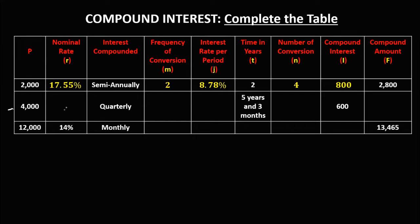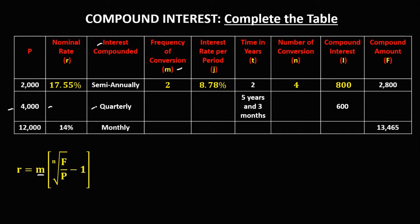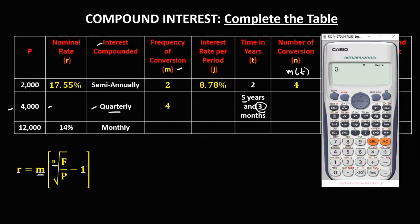For the next row, using the same formula, M is the frequency of conversion. Since interest is compounded quarterly, M is equal to 4. To solve for N, N is M times the time. Since the time is 5 years and 3 months, we convert 3 months to years by dividing 3 by 12, which gives 0.25, plus 5 years equals 5.25. Then 5.25 times 4 equals 21, so N is equal to 21.